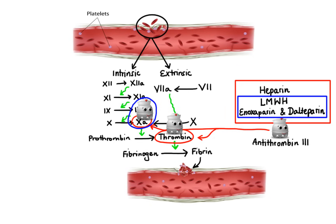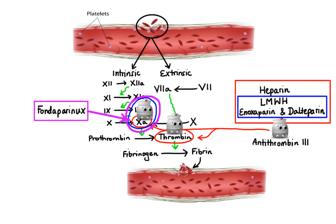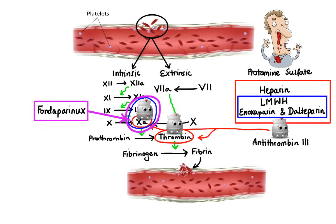Another agent worth mentioning is fondaparinux, which also selectively accelerates inactivation of factor 10a. Unlike low molecular weight heparins, fondaparinux doesn't bind to any other plasma proteins and has no direct effect on thrombin. When it comes to side effects, bleeding is a major risk. Fortunately, there is a reversal agent called protamine sulfate, which can be used to treat excessive bleeding caused by heparin drugs — it works by binding to heparin or low molecular weight heparins to form a stable inactive complex. Fondaparinux, on the other hand, doesn't have any specific antidote at this time.